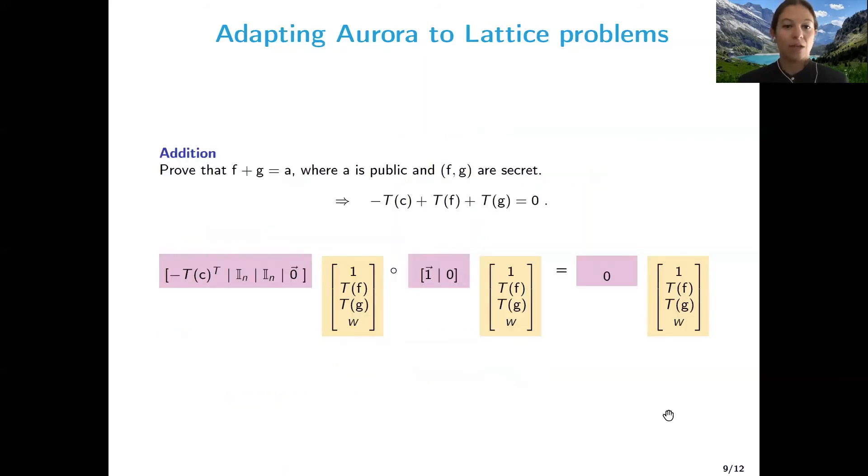But let's start with addition. So we want to prove that given the secret F and secret G, their sum is equal to A, where A is public. How are we going to do it? We're going to consider the number theoretic transform of the three of them. So we're going to define A as having minus T(A) transpose (the transpose is just for a dimensional reason) as the first column, and then the identity in the other part that multiplies the secret vector. And as secret vector V, we're going to set T(F) and T(G). And W is really not important, we're going to always multiply it times zero, so it doesn't matter which value it has.